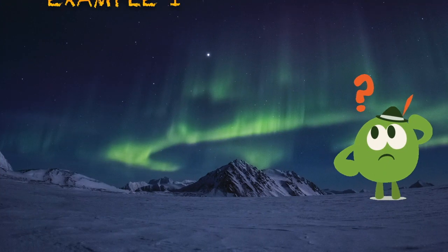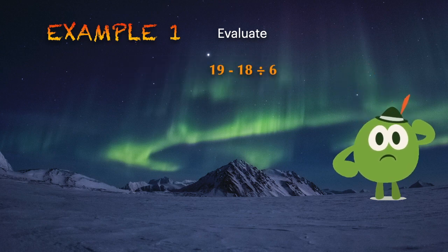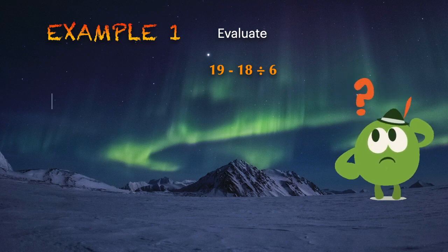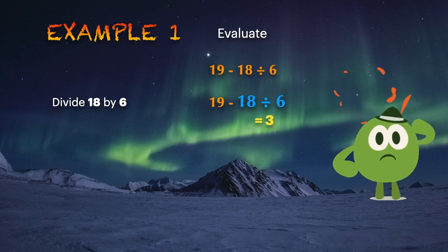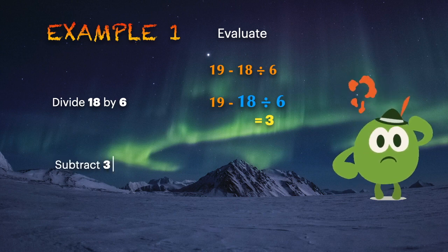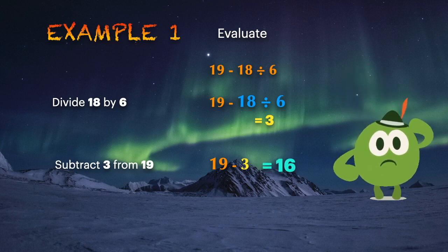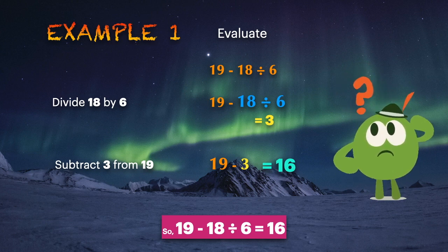Let's take this example: evaluate 19 minus 18 divided by 6. Using the order of operations, divide first, then subtract. First, divide 18 by 6, which gives a quotient of 3. Then subtract 3 from 19, which gives an answer of 16. So 19 minus 18 divided by 6 equals 16.